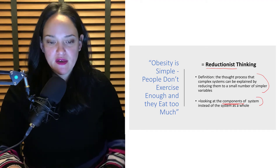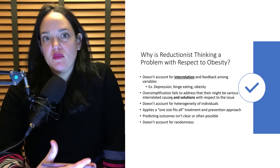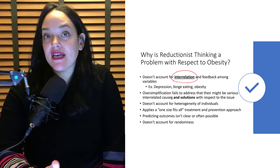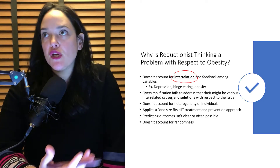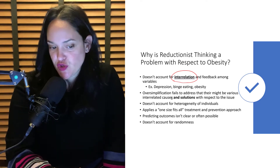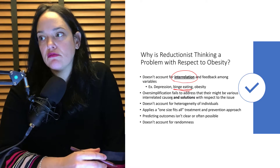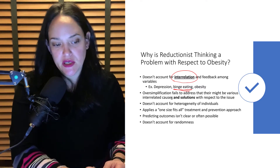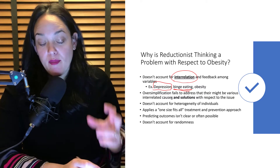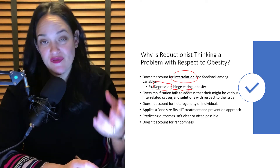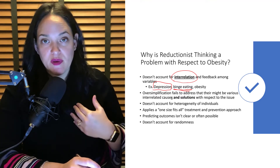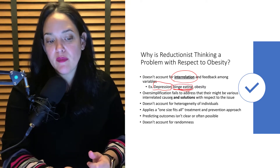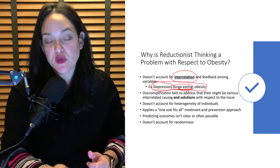That's more of a systems thinking view. There are many problems with using a reductionist lens to study obesity. One is that it doesn't account for the interrelation and feedback amongst variables. We might just dismiss obesity for a certain person and say they binge eat too much. Yes, binge eating can promote obesity — but why is someone binge eating so much? Perhaps they're binge eating because they're dealing with depression, and perhaps they're dealing with depression because of their weight or an environmental influence. We often just look at one variable without understanding the feedback between components.